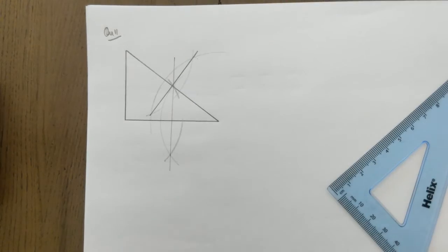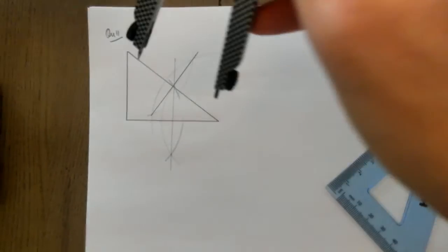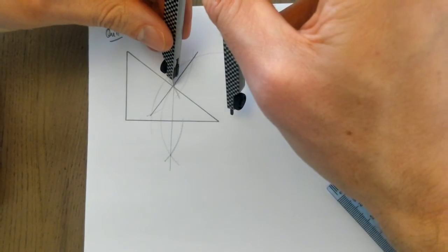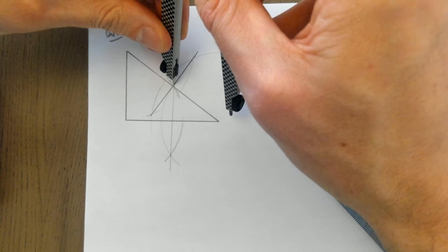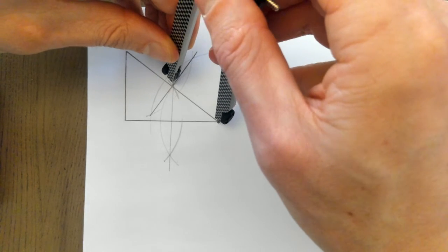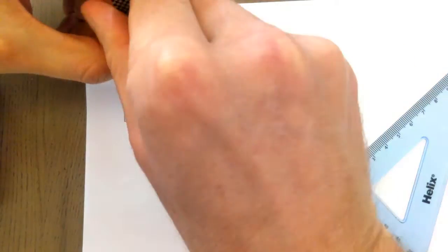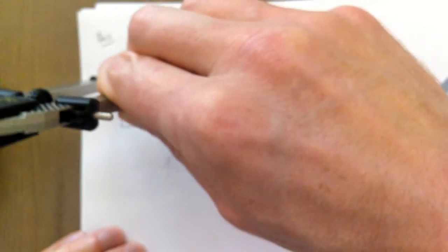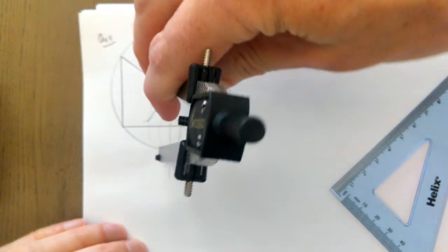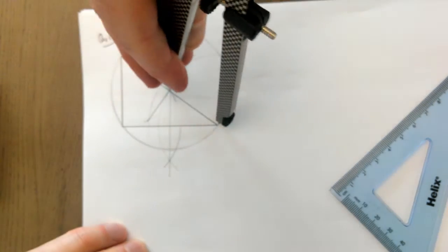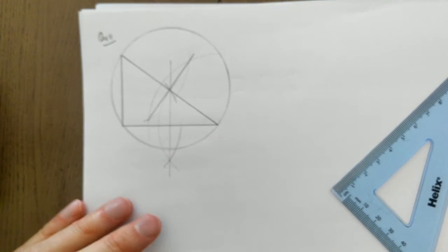Mine's slightly off there, so I might have been a little bit wrong, but it always lands on the hypotenuse. If it's spot on, then it should end up with the corners of the circle. There, okay? So there's the circumcircle.